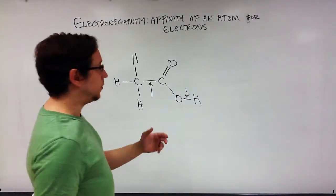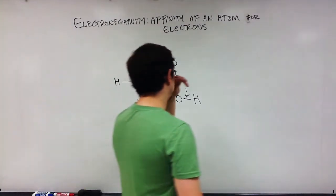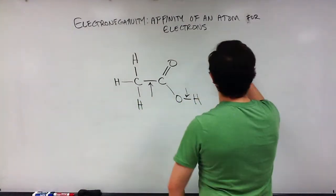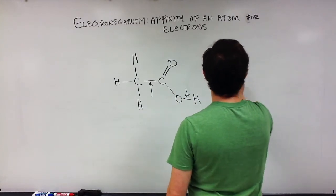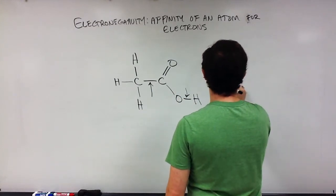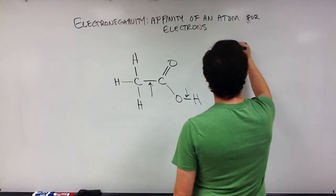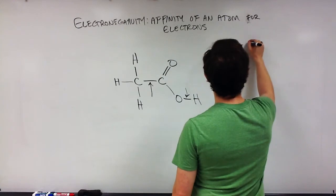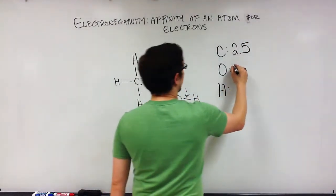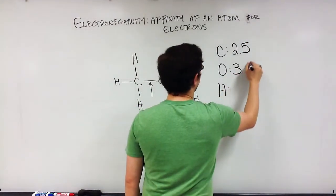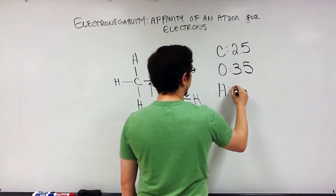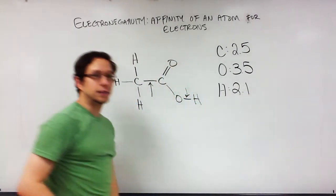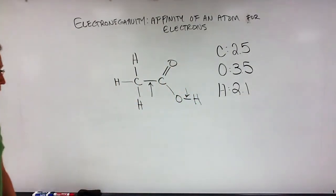The electronegativities, which you can obtain from an electronegativity chart, are as follows: carbon has an electronegativity of 2.5, oxygen has an electronegativity of 3.5, and hydrogen has an electronegativity of 2.1.